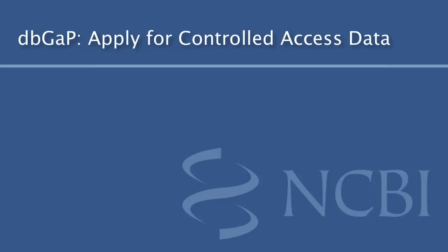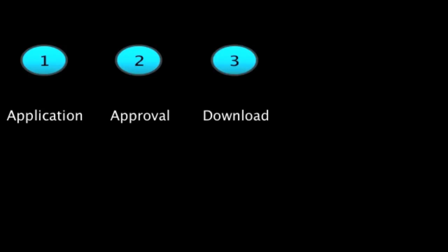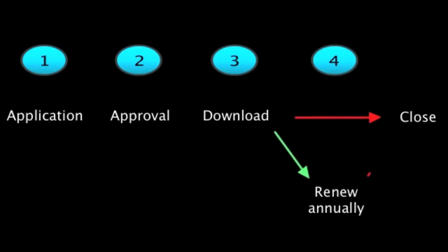This tutorial walks you through the steps to request access to controlled data in dbGaP. Overall there are four steps. The first, which is covered in this video, is your application for access. The second step is the approval process. The third is downloading the data. And the fourth requires that you either close out the project or renew it annually. The close out and renew steps each have their own video tutorials.